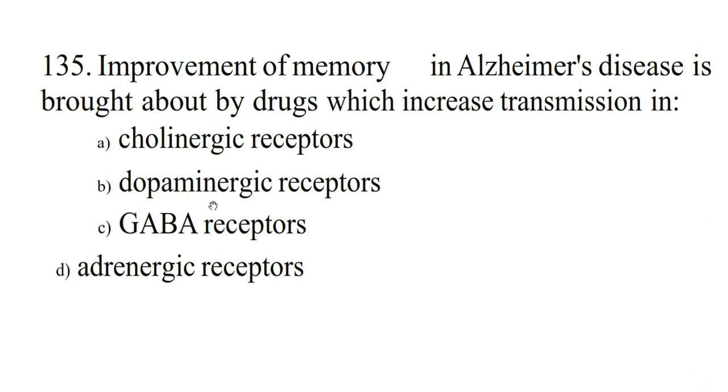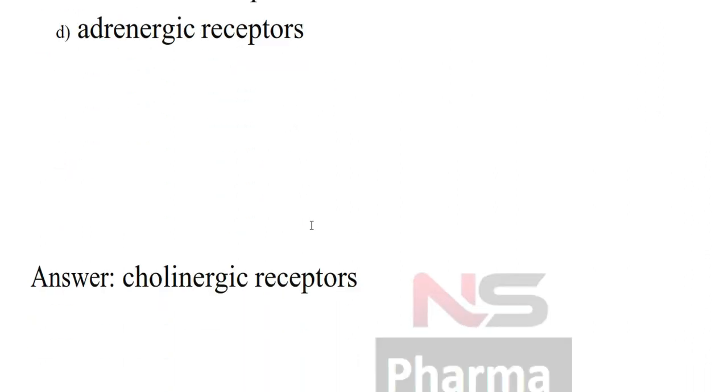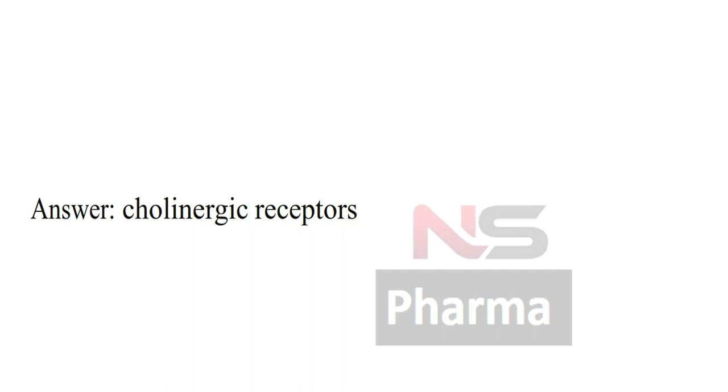Next question. Improvement of memory in Alzheimer's disease is brought about by drugs which increase transmission in: Option A Cholinergic receptors, Option B Dopaminergic receptors, Option C GABA receptors, Option D Adrenergic receptors. Answer: Cholinergic receptors.